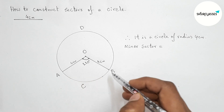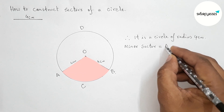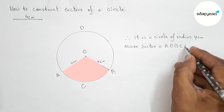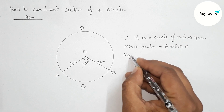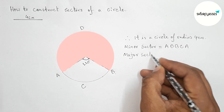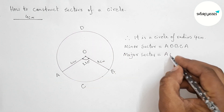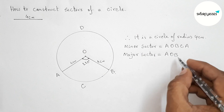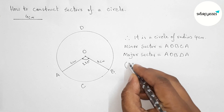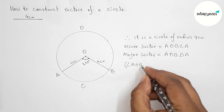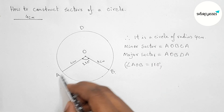Now let's write down the minor sector and the major sector of the circle. The minor sector is A-O-B-C-A. The major sector of the circle is A-O-B-D-A. Now, given that angle AOB is 110 degrees.